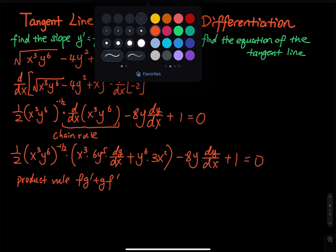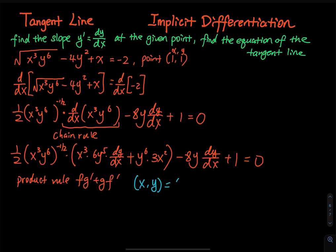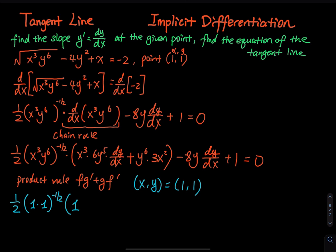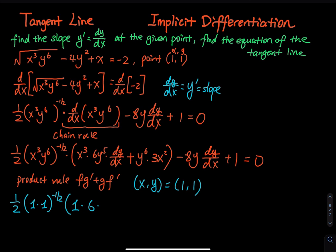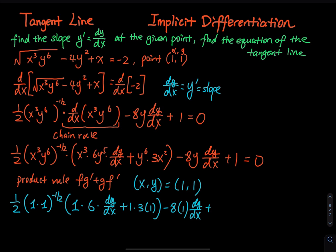Let's substitute x = 1, y = 1. The reason I like ones is that after plugging in, everything simplifies easily. So we have one-half times (1)^(−1/2), and inside the product rule that gives 1 times 6·(dy/dx), plus 1 times 3·1², minus 8 times 1 times dy/dx, plus 1 equals zero.